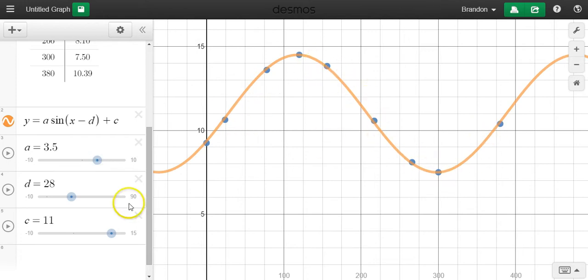I think my points are a little to the right still. So let's adjust the D value of the horizontal translation. All right, I think I got them pretty much right on now.